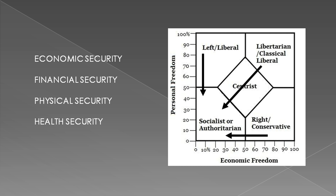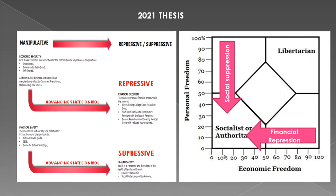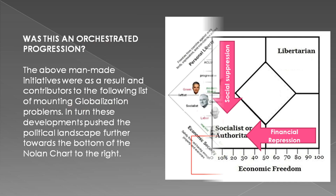Next we experienced concerns around physical safety — terrorism after 9/11 — as the world changed due to bin Laden, al-Qaeda, ISIS, and domestic school shootings that seem to occur almost daily. Now it is health safety: the COVID-19 pandemic, social distancing, and lockdowns that everyone is acutely aware of. Was this an orchestrated progression? These man-made actions and initiatives were both a result of and contributors to a number of mounting globalization problems.